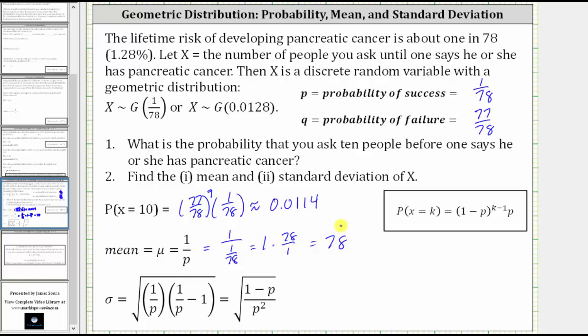The mean is equal to 78, which means we would expect to ask 78 people before someone said yes, they have pancreatic cancer.